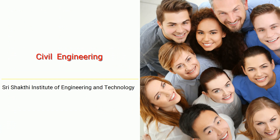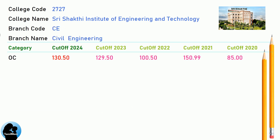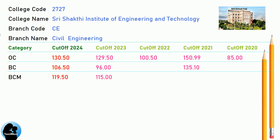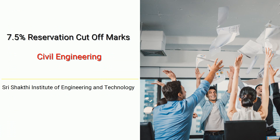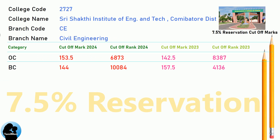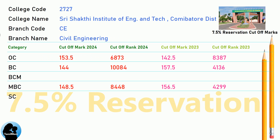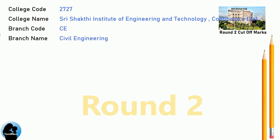DNA Cut-Off for Shri Shakti Institute of Engineering and Technology in Civil Engineering. DNA 7.5 Reservation Cut-Off for Shri Shakti Institute of Engineering and Technology in Civil Engineering. DNA Round 2 Cut-Off for Shri Shakti Institute of Engineering and Technology in Civil Engineering.